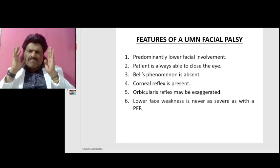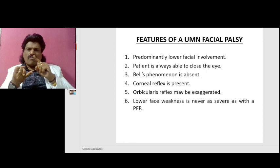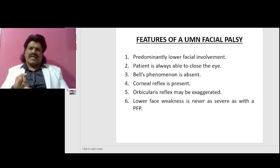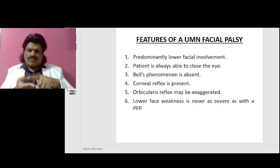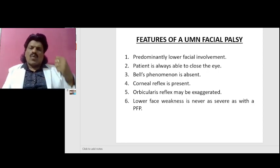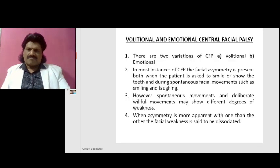So these are the important features of a UMN facial palsy: predominantly lower facial involvement, patient is always able to close the eye, Bell's phenomenon is absent, corneal reflex is present, orbicularis reflex may be exaggerated, and lower facial weakness is never as severe as with the peripheral facial palsy.